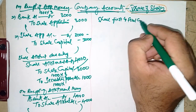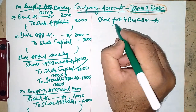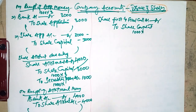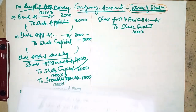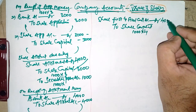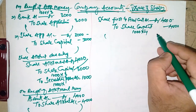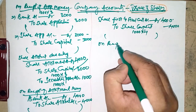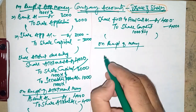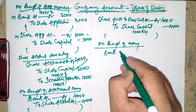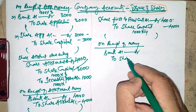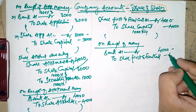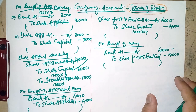Once allotment is done, the share first and final call due entry is: Share First and Final Call Account Dr. to Share Capital — 1000 shares × ₹4 = ₹4000. Then on receipt of money: Bank Account Dr. to Share First and Final Call — ₹4000. There are no call arrears, so the full amount is received. This completes the journal entries for this question.